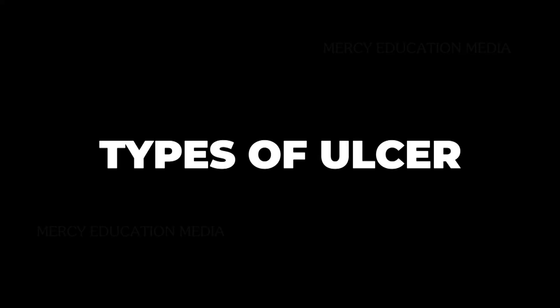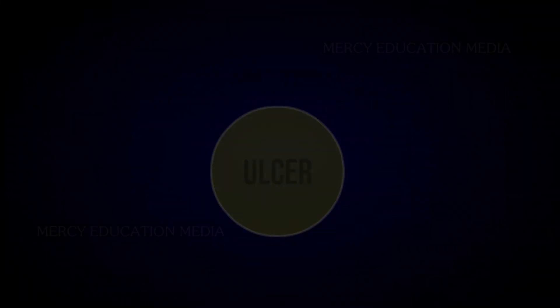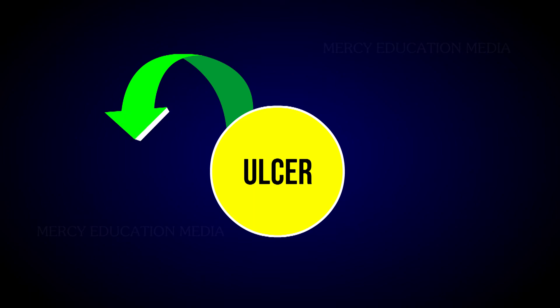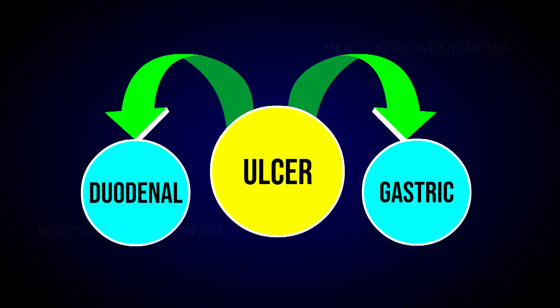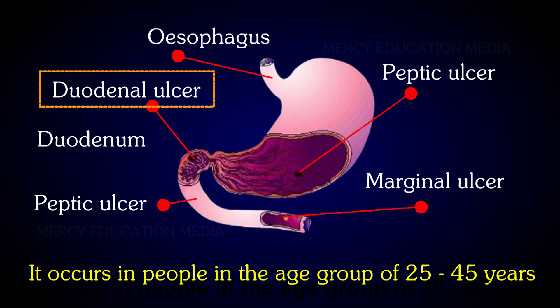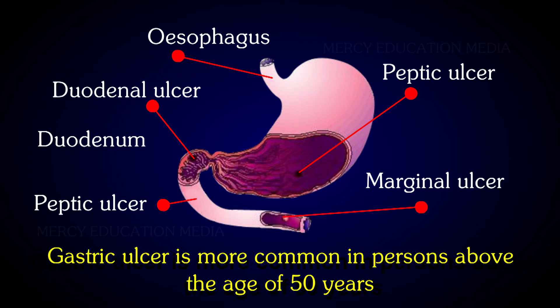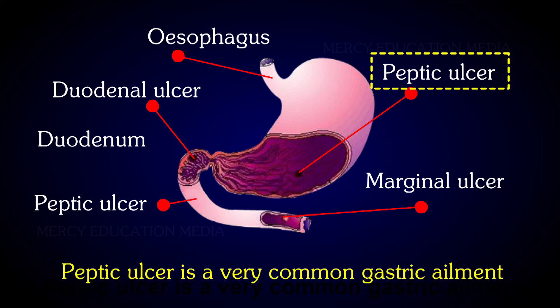The ulcer has two forms: duodenal ulcer and gastric ulcer. Of the two, duodenal ulcer is more common. It occurs in people in the age group of 25 to 45 years. Gastric ulcer is more common in persons above the age of 50 years. Peptic ulcer is a very common gastric ailment.